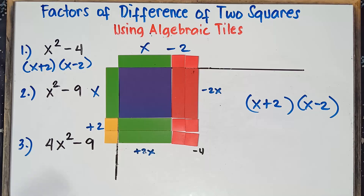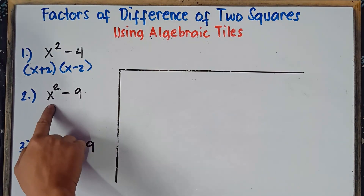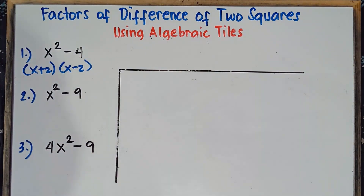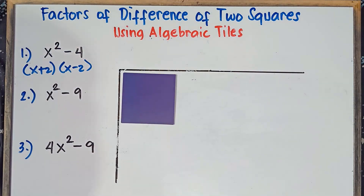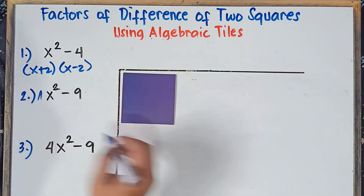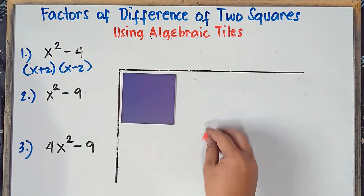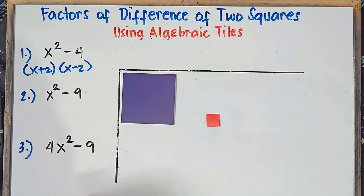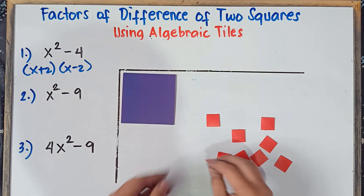Let's proceed now to example number 2. Our given: we have 1x squared (positive x squared) and then negative 9. So we need to use red tiles: 1, 2, 3, 4, 5, 6, 7, 8, and 9.